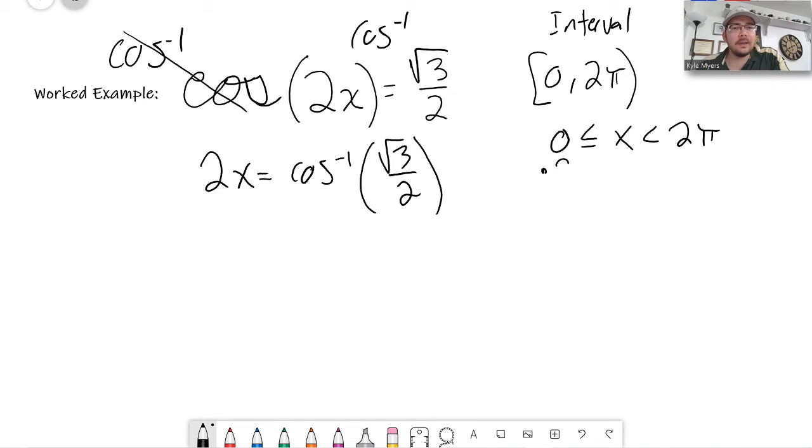I could multiply everything by 2. That would still be 0, this would be 2x, this would be 4π. So if I want to know what the interval is of 2x, it would be twice the interval of x. So from 0 to 4π. So I actually want all of the answers from 0 to 4π.